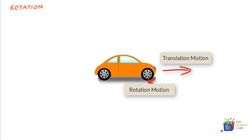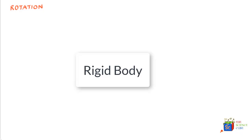Before we go ahead and study rotational motion in greater detail, let us familiarize ourselves with some very important terms that will form the foundation of the topic of rotation. The first term is called rigid body. A rigid body is one that can rotate about an axis without its shape getting changed.